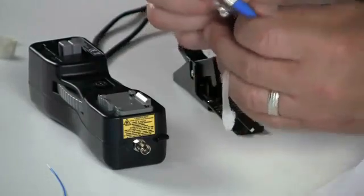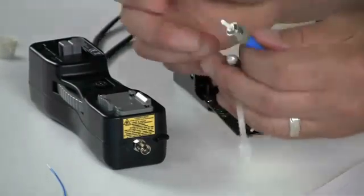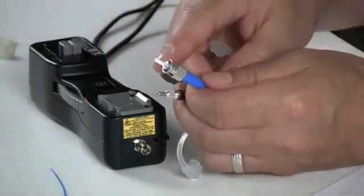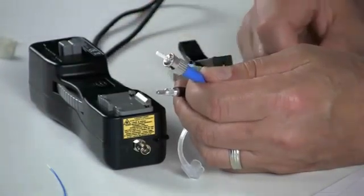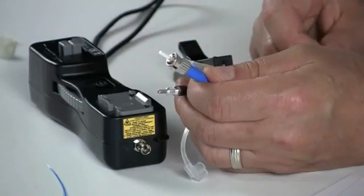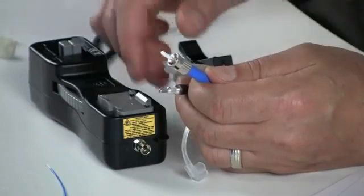Secondly, check the end face of the VFL cord that is utilized in the termination process. You can utilize a video scope or a hand-held scope to look at the end face. If the end face is dirty, utilize a kim wipe or a cassette cleaner to clean that.